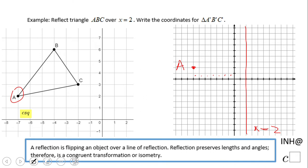4, 5, 6, 7, 8, 9. Then 1, 2, 3, 4, 5, 6, 7, 8, 9 on the other side. This will be A prime, reflected over x equals 2. Let's take a look at point B. Point B is at negative 4 and